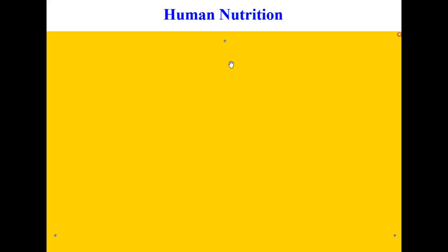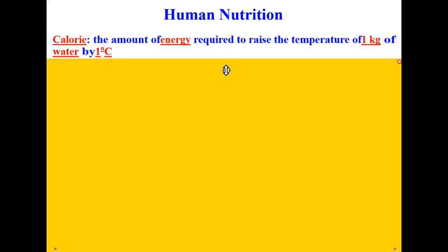Welcome to the lesson on human nutrition. In this lesson we'll be discussing the scientific definition of a calorie. We'll also discuss energy containing nutrients, tissue building nutrients, and the usefulness of water, vitamins, minerals, fiber, and we'll also highlight four disorders of the digestive system.